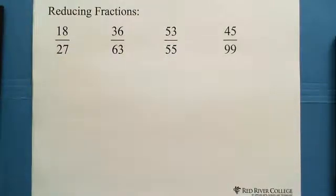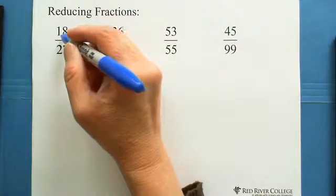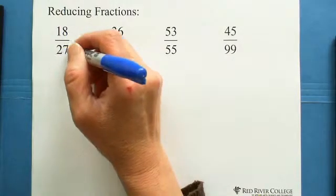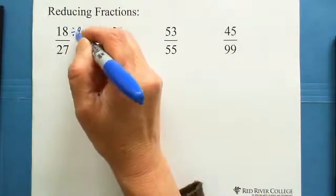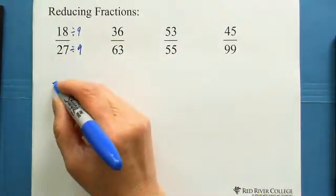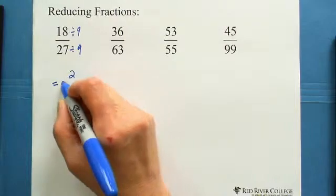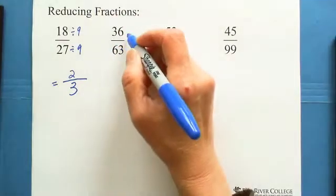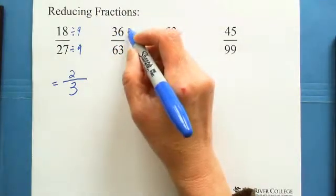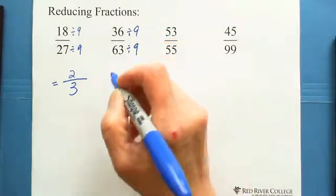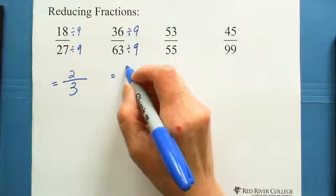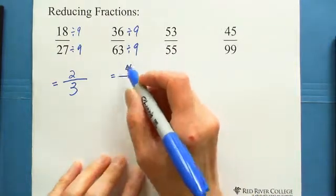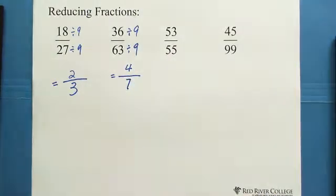Let's look at how to reduce fractions using the divisibility test of 9. For 18 over 27: 1 plus 8 equals 9, and 2 plus 7 equals 9 — both divisible by 9. 18 divided by 9 equals 2, and 27 divided by 9 equals 3. You get 2 thirds. For 36 over 63: both are divisible by 9. 36 divided by 9 equals 4, and 63 divided by 9 equals 7 — so you get 4 over 7.